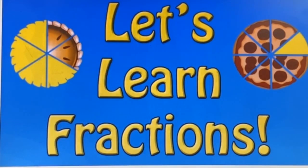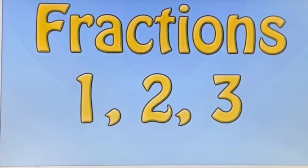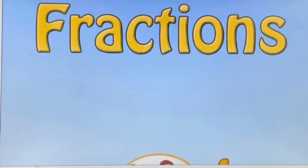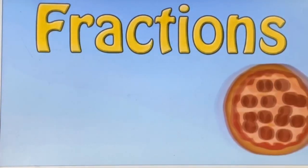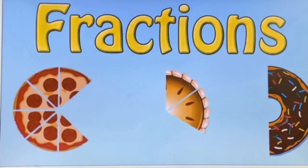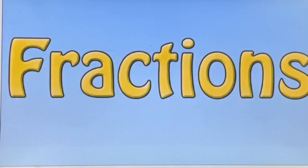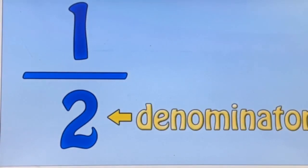Let's learn fractions. Understanding fractions can be easy as 1, 2, 3. It's easy to count whole things like a pizza, a pie, or a donut, but what if we only had part of one? How would we count it then? We'd use fractions. A fraction looks like this. The bottom number is called the denominator — it shows how many equal pieces an object has been divided into.